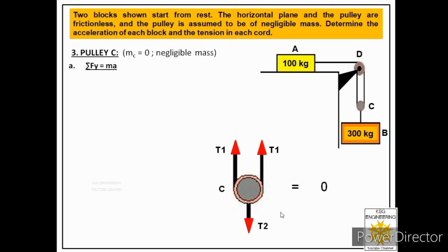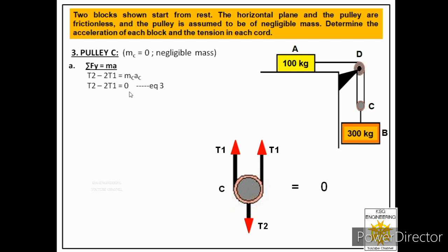Examining the forces in the y-direction: T2 acts downward (in the direction of motion, so positive) and the two tensions T1 each act upward (opposite to motion, so negative). The equation becomes: T2 − 2T1 = mC·aC. Since mC = 0, this reduces to T2 − 2T1 = 0.